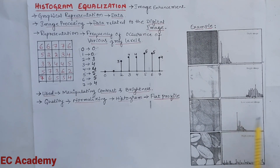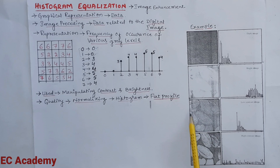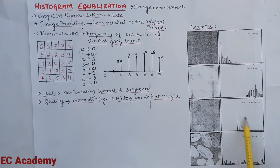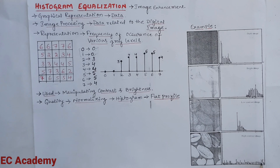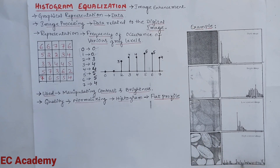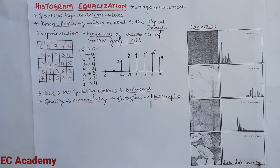For a low contrast image, the histogram is placed at the center. For a high contrast image, the histogram is distributed across the entire plane — this is called the flat profile of the histogram. A high contrast, good quality image has histogram values distributed over the entire plane with a flat profile.